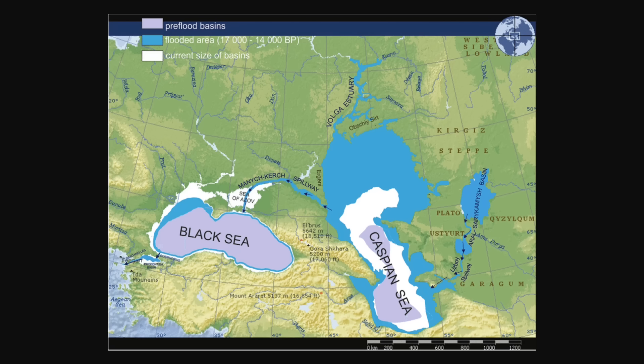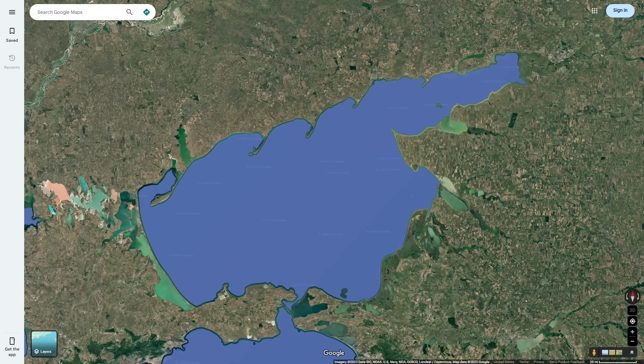Before this time, the Sea of Azov was actually land, with a major spillway going through the center of it, which was named the Manich-Kerch spillway. This actually went from the Caspian Sea into the Black Sea. However, as the glaciers were melting at the end of the last ice age, the Sea of Azov filled up and became what we see it as today.